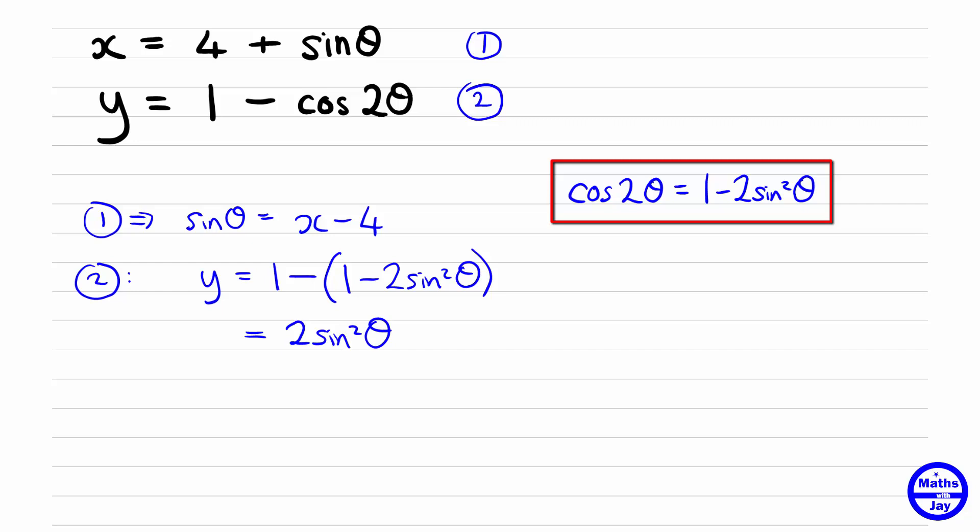But we know that sin theta is x minus 4, so that's equal to 2 x minus 4 squared. So there is our equation.